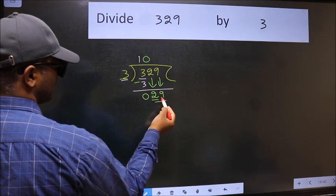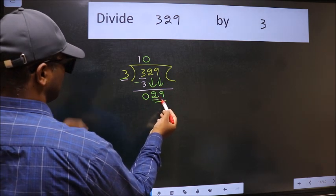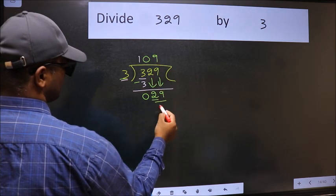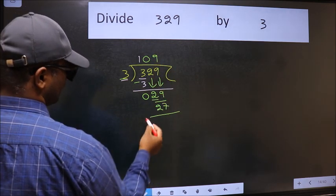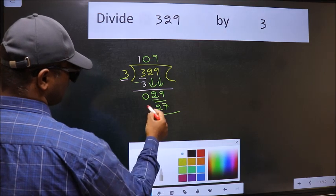Now 29. A number close to 29 in 3 table is 3 nines 27. Now we should subtract. We get 2.